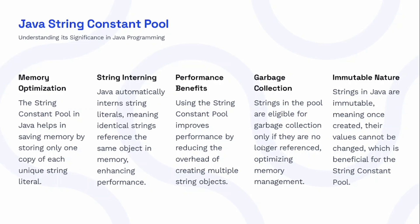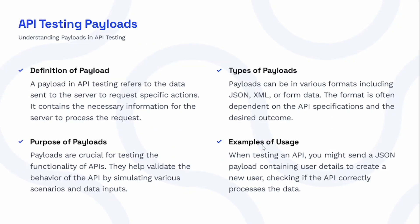The next set is about API testing payloads. A payload in API testing refers to the data sent to the server to request specific actions — it contains the necessary information for the server to process the request. Payloads are crucial for validating API behavior by simulating various scenarios and data inputs. Payloads can be in various formats including JSON, XML, or form data, depending on API specifications. For example, you might send a JSON payload with user details to create a new user, checking if the API correctly processes the data.